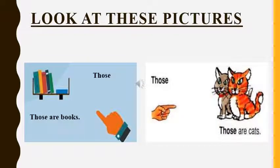Look at these pictures. In the first picture, the person pointing out is standing far from the books, and the books are more in number. So we can use the word 'those'. Similarly, in the second picture, the cats are far from the person and more in number. So we can use the word 'those' here. We will say, those are books, those are cats.